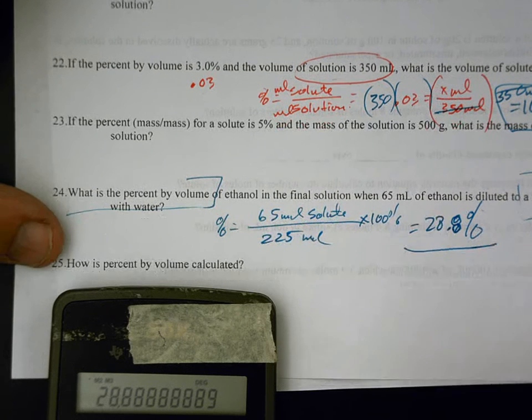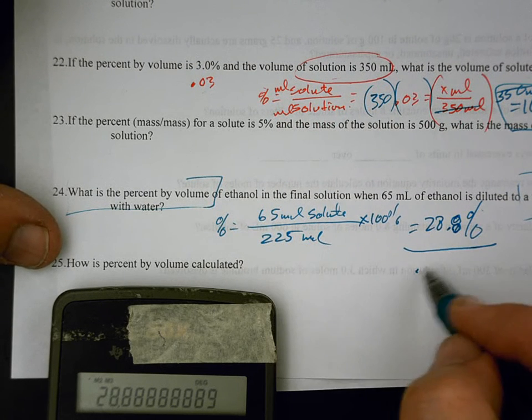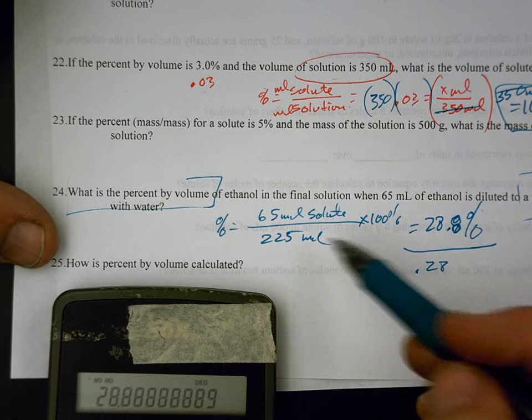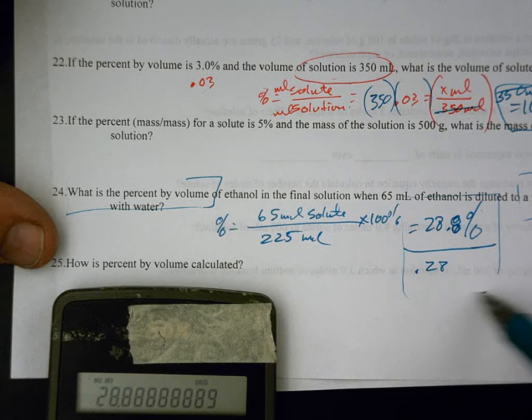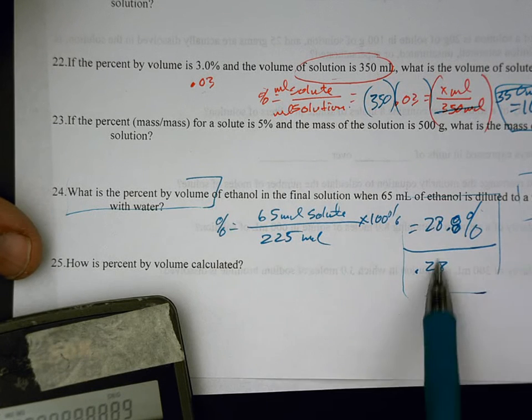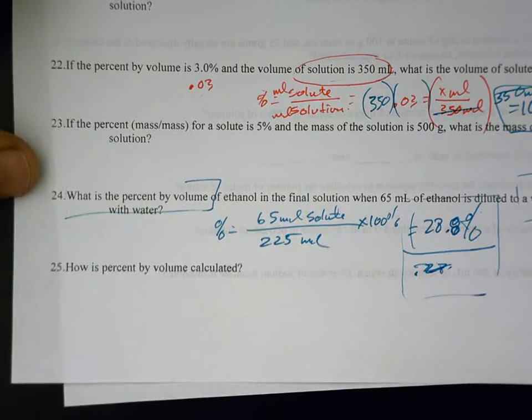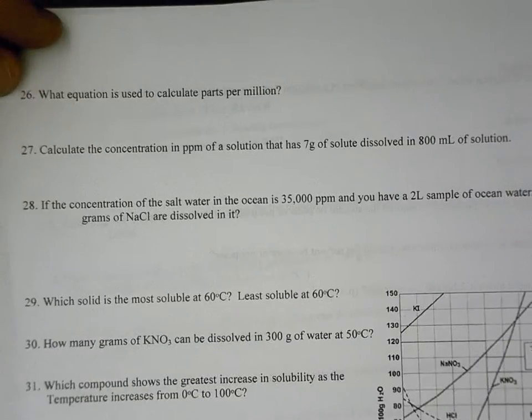Now, be careful, because there could be a choice on the test that says 0.28, and if you mark that one, that's not correct, because you have to multiply it by the 100. So just be careful. What is the percent? We've calculated the percent there. That'll be the answer.